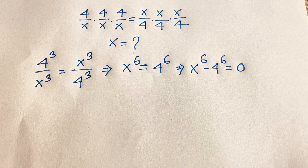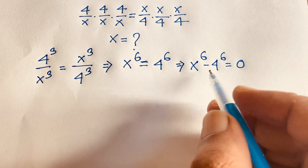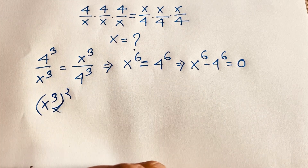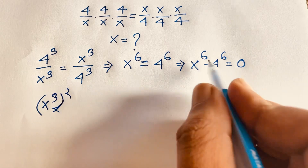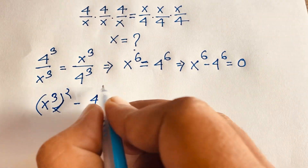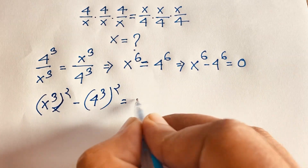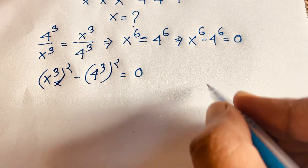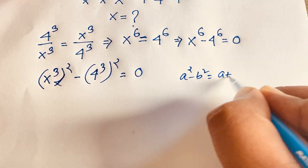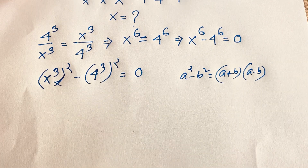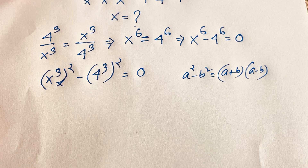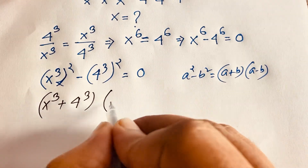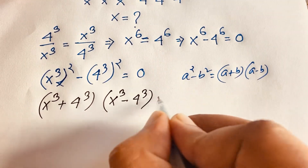Here we have x to the power 6 and 4 to the power 6. I can rewrite x to the power 6 as x to the power 3, whole to the power 2, since 3 times 2 equals 6. Similarly, 4 to the power 3, whole to the power 2. Now applying the law a squared minus b squared equals a plus b times a minus b, we get: x to the power 3 plus 4 to the power 3, times x to the power 3 minus 4 to the power 3, equals 0.